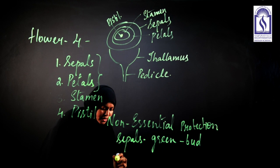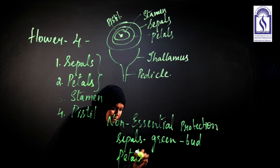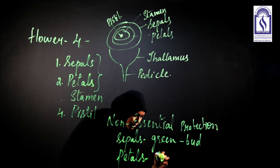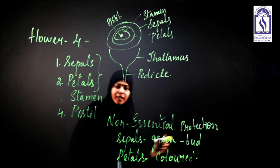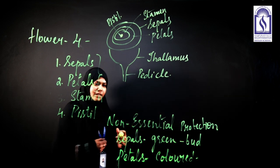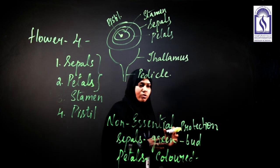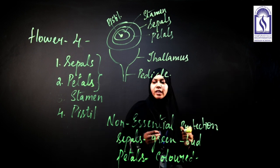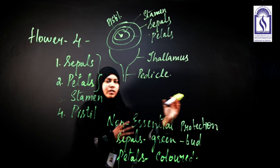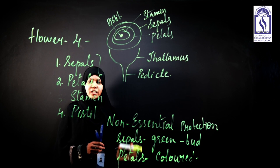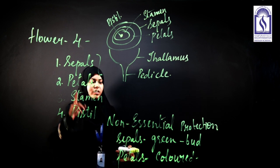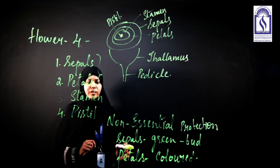The second whorl consists of petals, which are usually colored and they attract insects for the process of pollination. We will be further learning about pollination. These are the two non-essential parts of the plant.